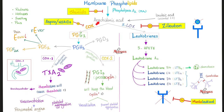Then arachidonic acid — thank you, linoleic acid — can branch into two separate pathways. You can use the cyclooxygenase pathway or the lipoxygenase pathway. Arachidonic acid via cyclooxygenase is going to give us prostaglandins. But via lipoxygenase, arachidonic acid will yield leukotrienes.